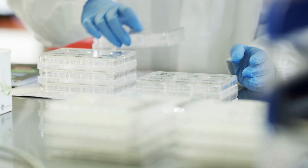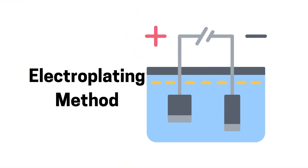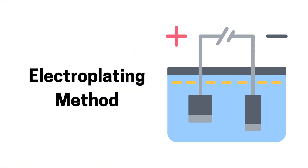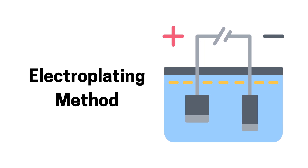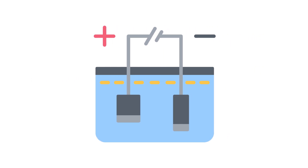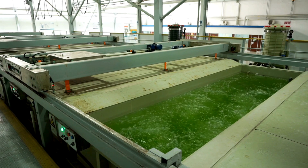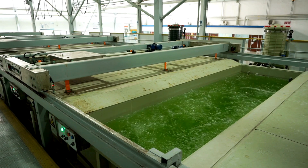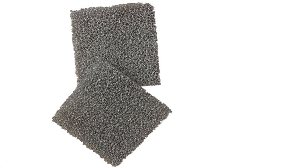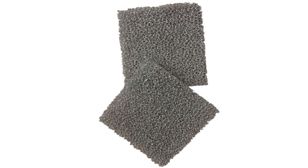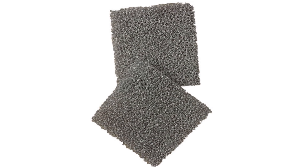There are a few different methods, but let's focus on the most common one: the electroplating method. In this process, a polyurethane foam template is coated with a nickel solution through electroplating. Once the template is thoroughly coated, it's subjected to high temperatures to remove the polyurethane, leaving behind a pure nickel foam structure — the result is a lightweight, highly porous metal foam.